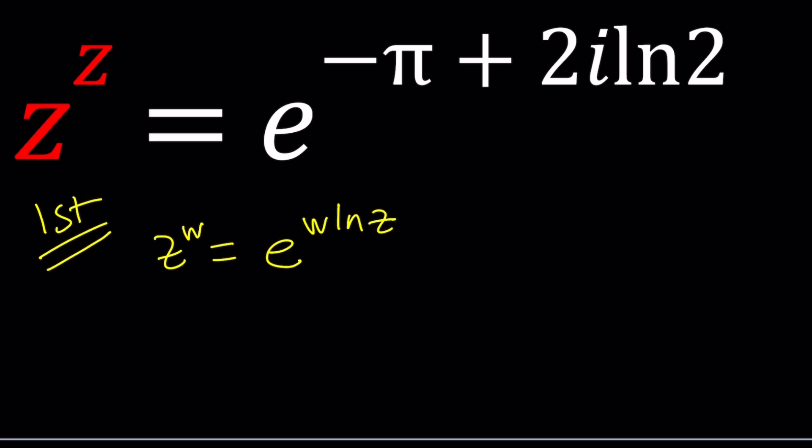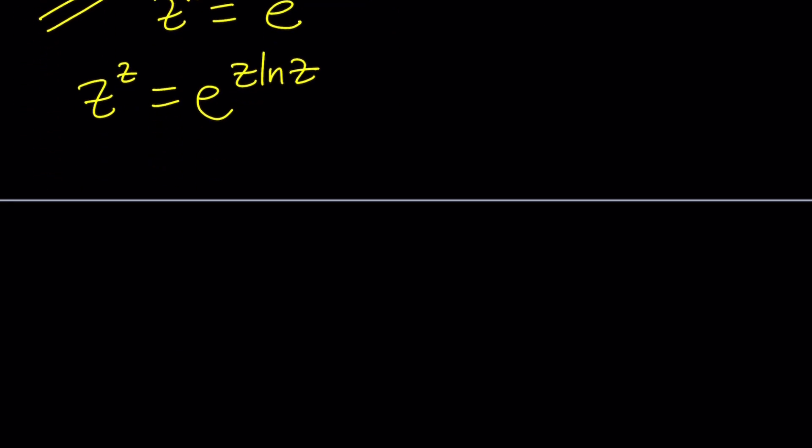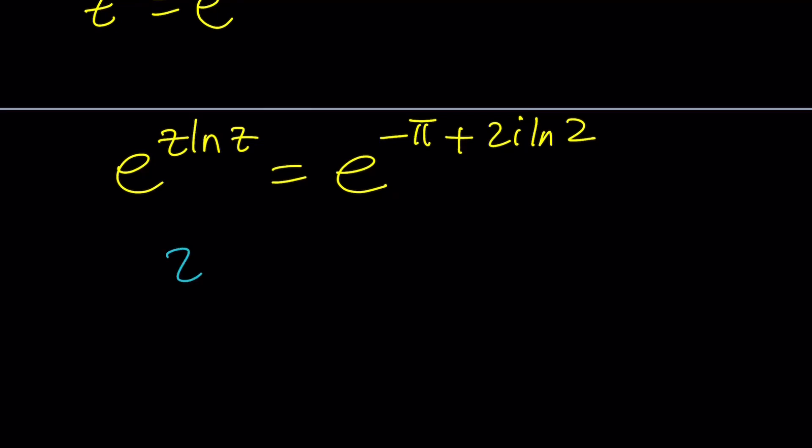Let's work this out. I'm going to replace Z to the Z with e to the power Z ln Z. Let's replace Z to the Z with that and we're going to have e's on both sides, which is nice because we can natural log both sides and get rid of the bases and proceed with the exponents. We get Z ln Z equals negative pi plus 2i ln 2.